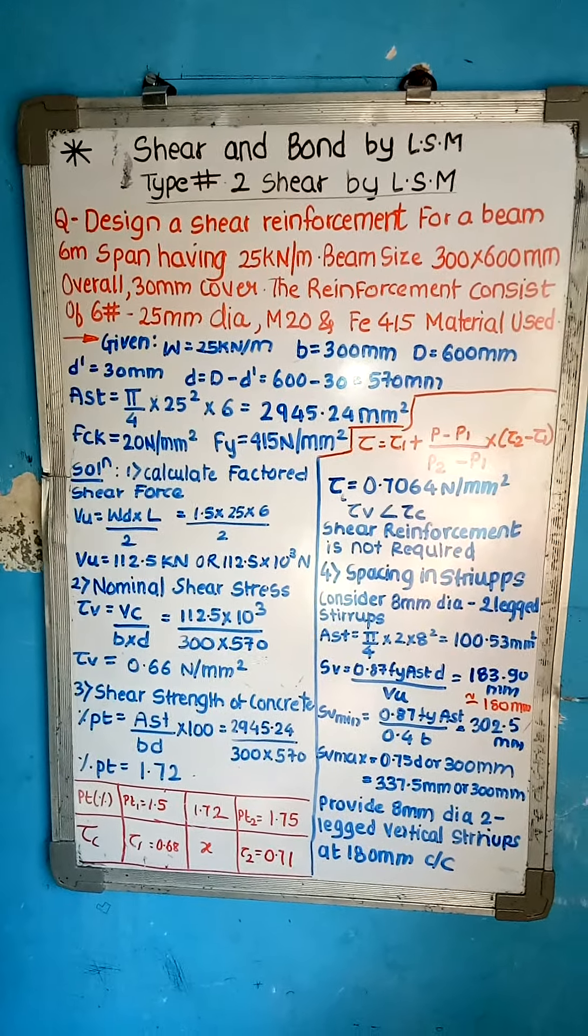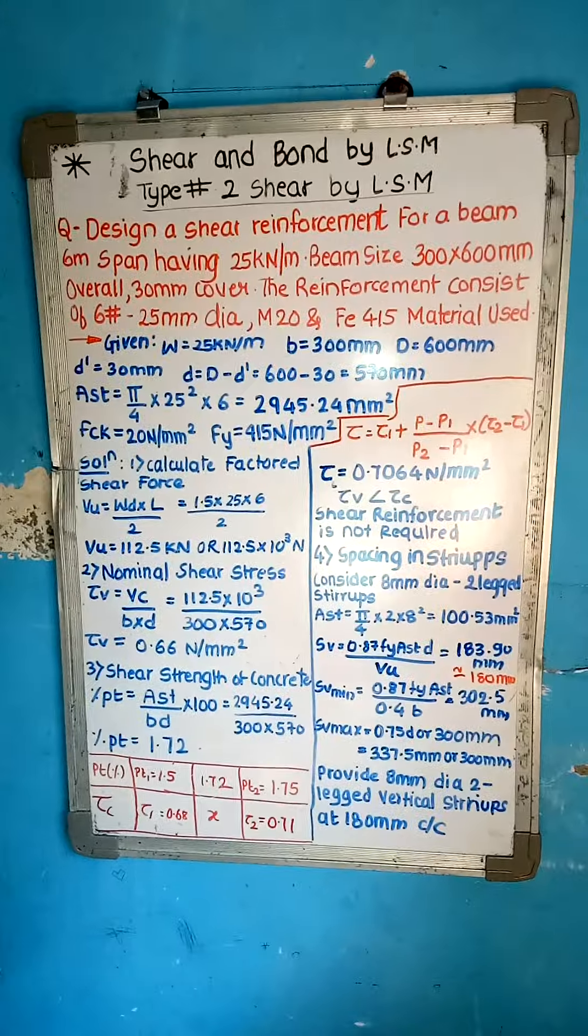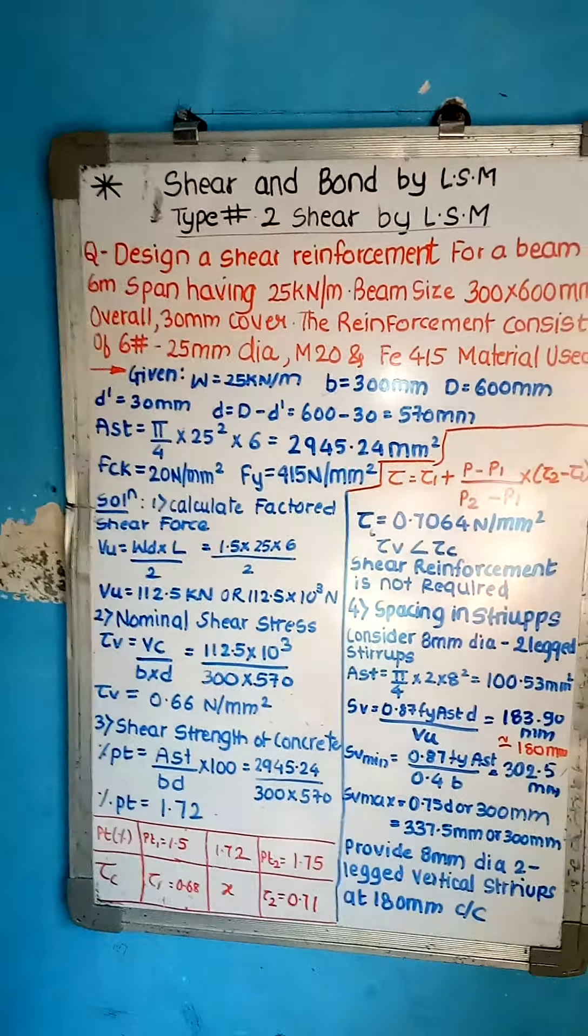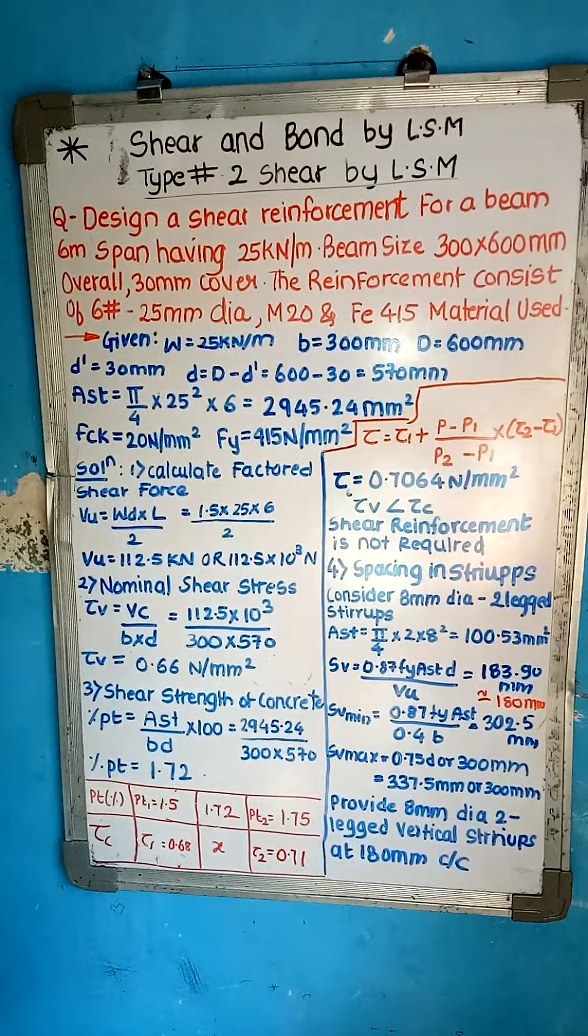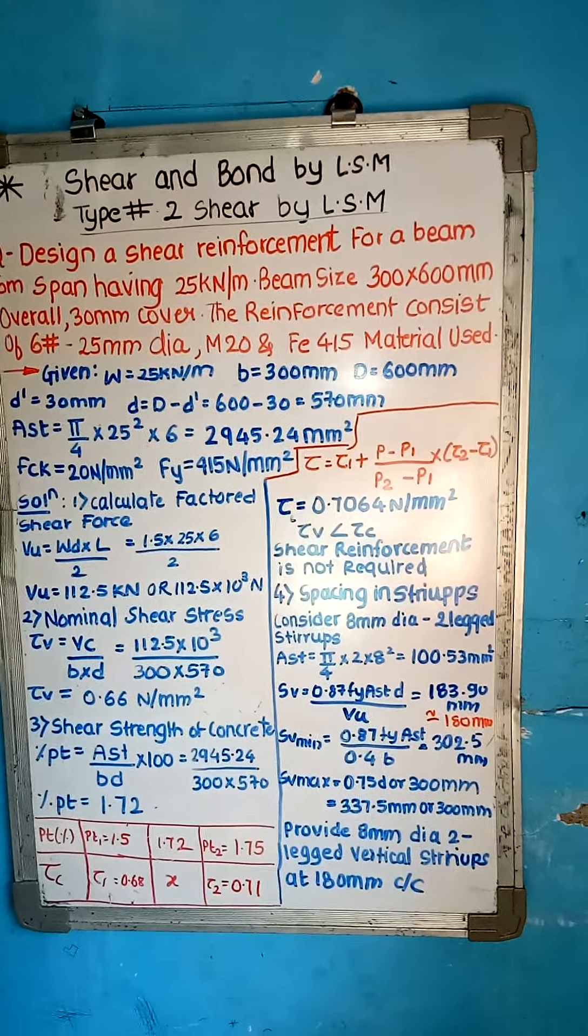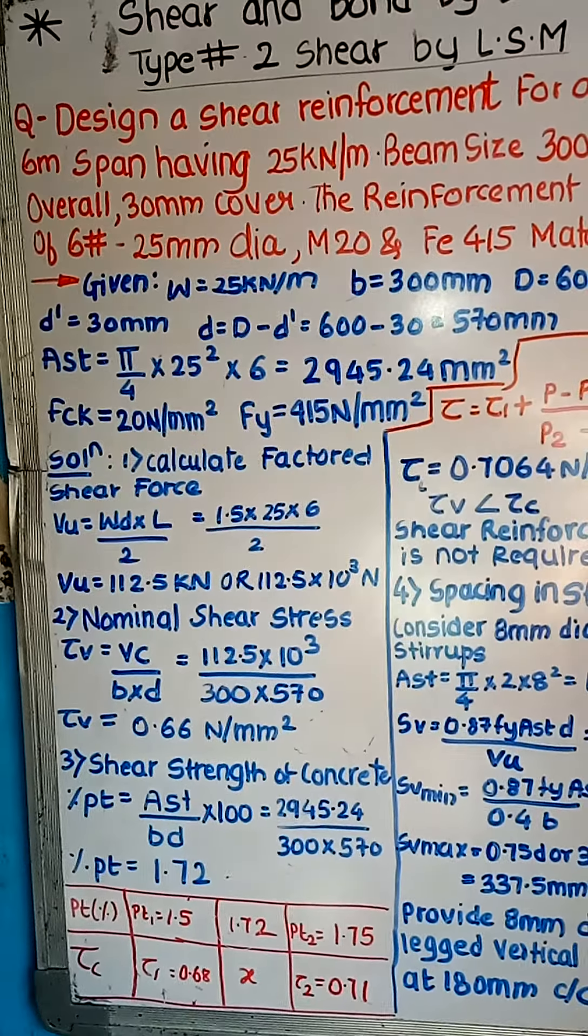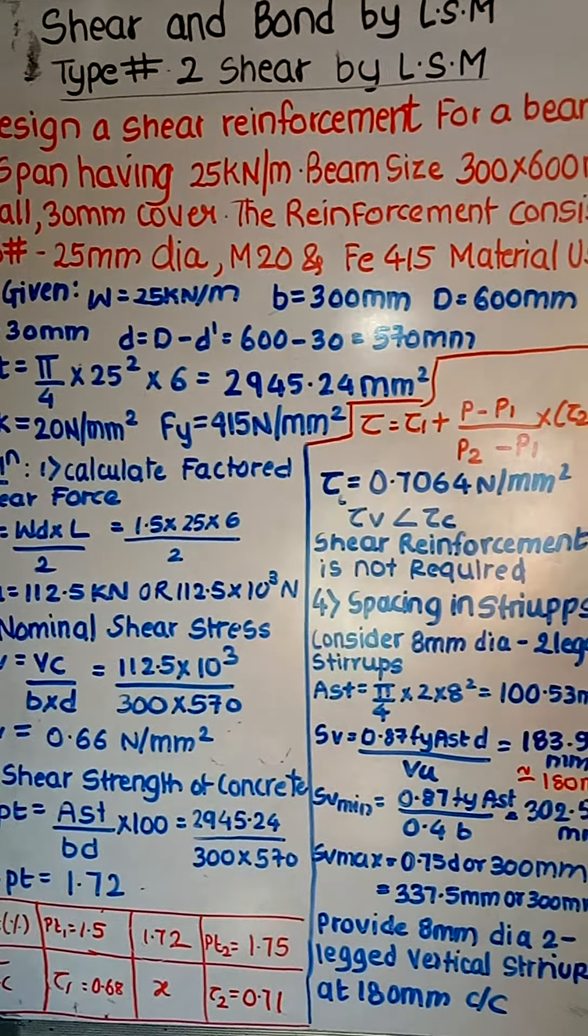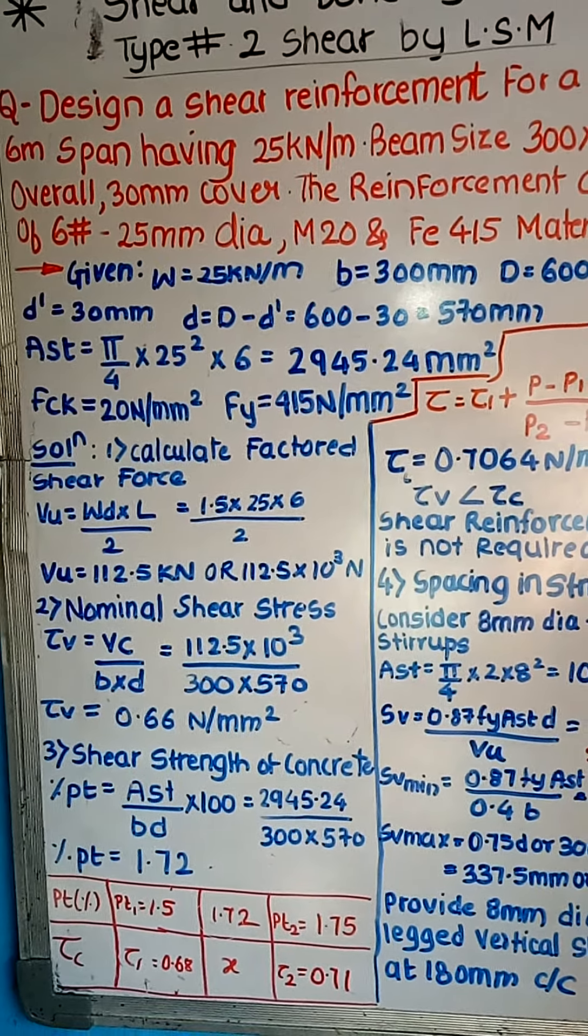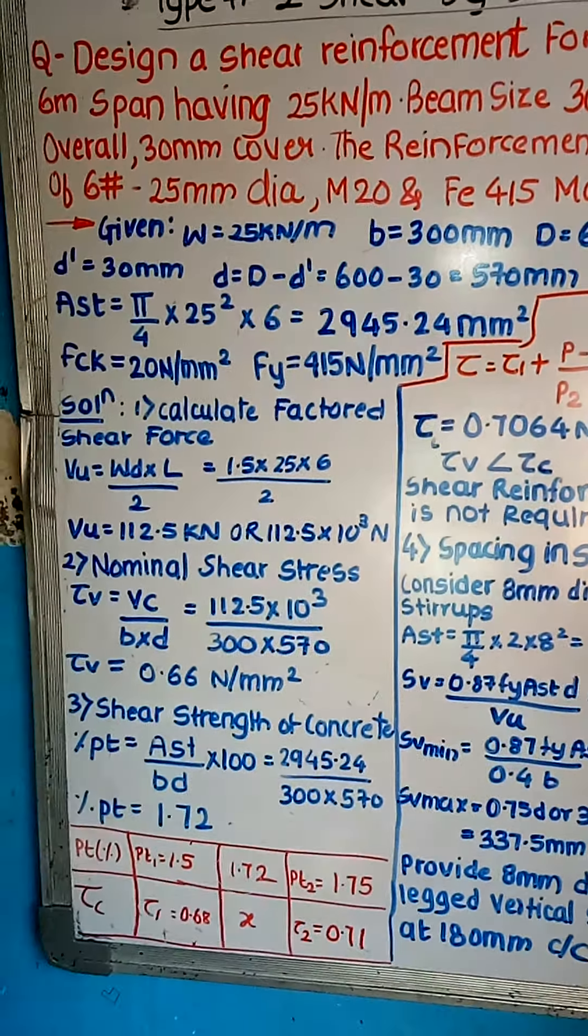Now today's topic is shear and bond by Limit State Method, Type Number 2, Shear by Limit State Method. The question is: Design a shear reinforcement for a beam 6 meter span having 25 kN per meter, beam size is 300 mm × 600 mm overall, 30 mm cover. The reinforcement consists of 6 numbers of bar 25 mm diameter, M20 and F415 materials are used.